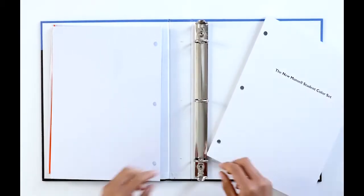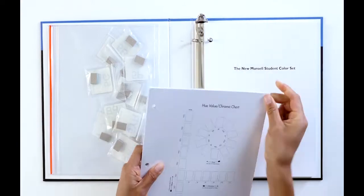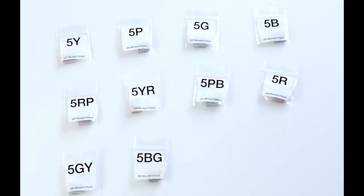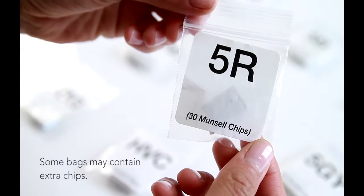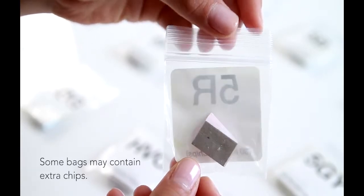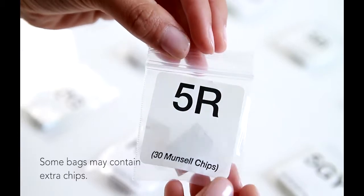Unwrap each set of pages and insert them into the binder rings. Check that you have all 12 bags. Each bag of chips is labelled for the chart that it corresponds to, along with the number of chips that the bag contains.